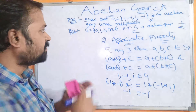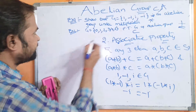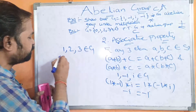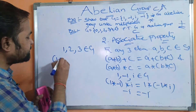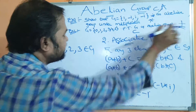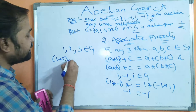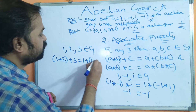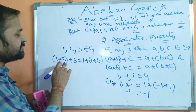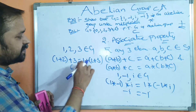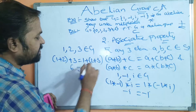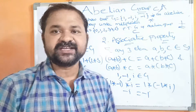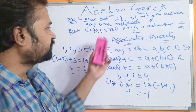For Example 2, take 1, 2, 3 belonging to G. We are doing the operation with respect to plus: (1 + 2) + 3 = 1 + (2 + 3). So 3 + 3 = 6 and 1 + 5 = 6. Since 6 = 6, associative property is satisfied for the second problem also.